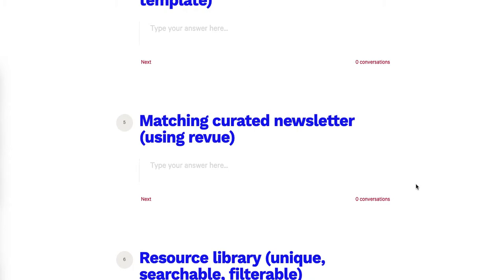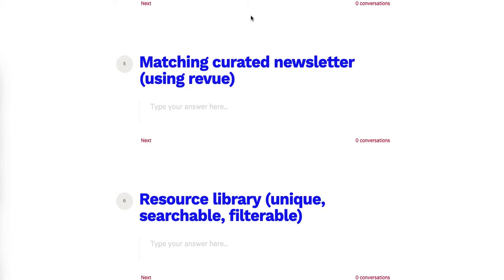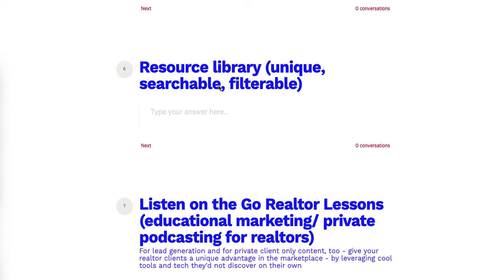The second offer uses Revue — a digital newsletter service that Twitter recently acquired, which I've been recommending for years. It matches in form and function the Canva PDF newsletter, covering the same events, restaurants, flea markets, farmers markets, and local recommendations. The newsletter you're offering the realtor as a service has two matching components: a physical PDF version that can be printed, and a fully digital version with the same listings and suggestions.